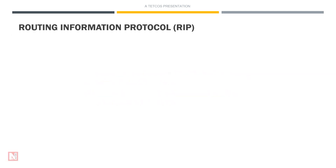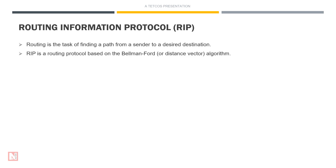Routing is the task of finding a path from a sender to a desired destination. RIP is a routing protocol based on the Bellman-Ford, or distance vector, algorithm.